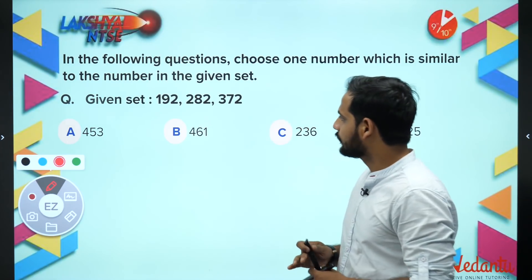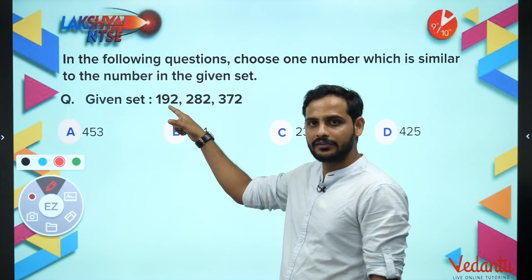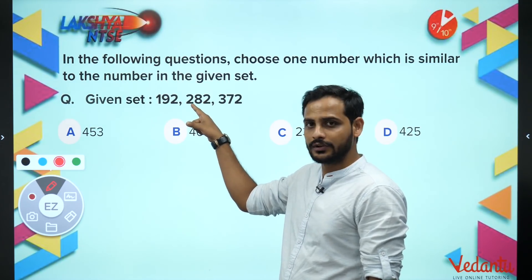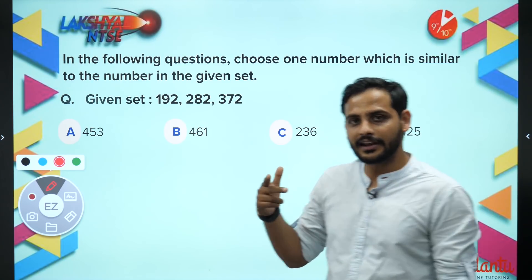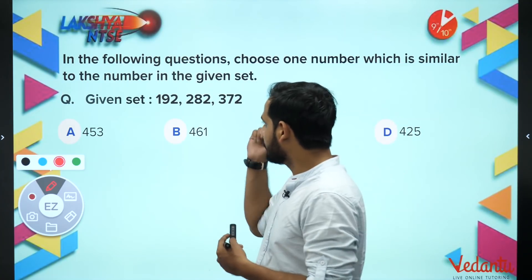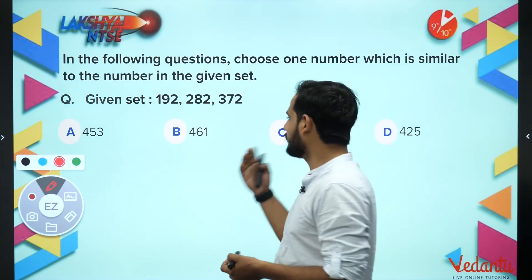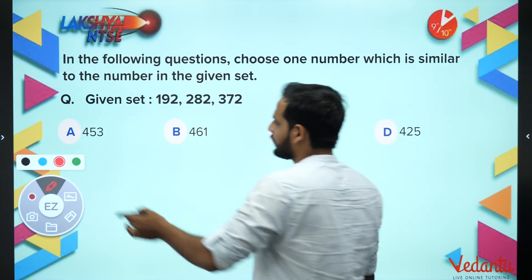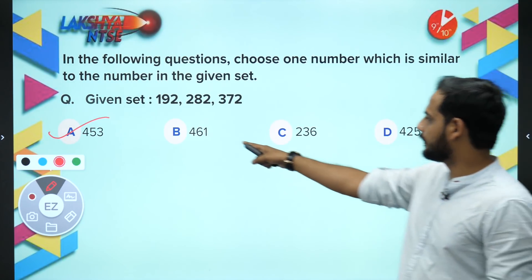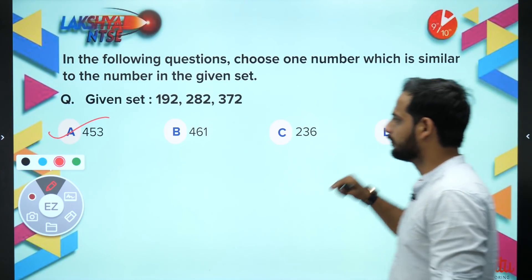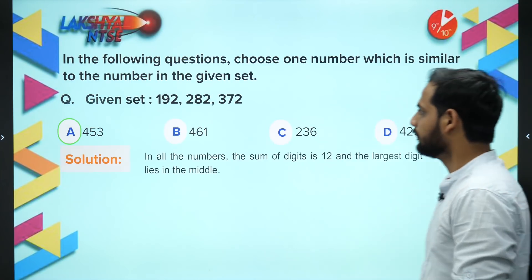Going to divisibility: 9+2+1=12, 8+2+2=12, 3+7+2=12 - sum of digits in all numbers is 12. Among the options, only option A has digit sum 12; the rest all have sum 11. So option A is the correct answer. This is how you prioritize your approach.